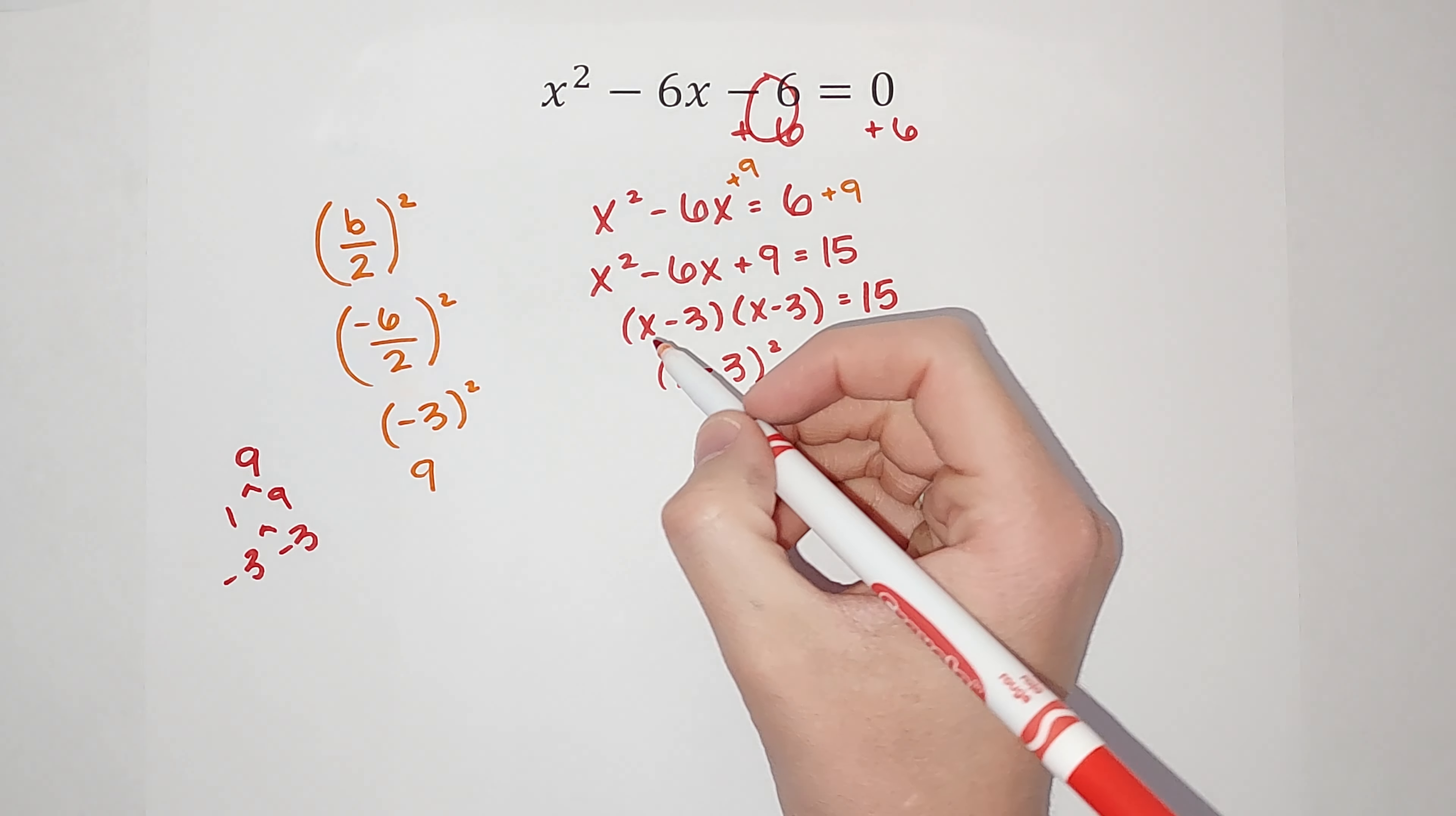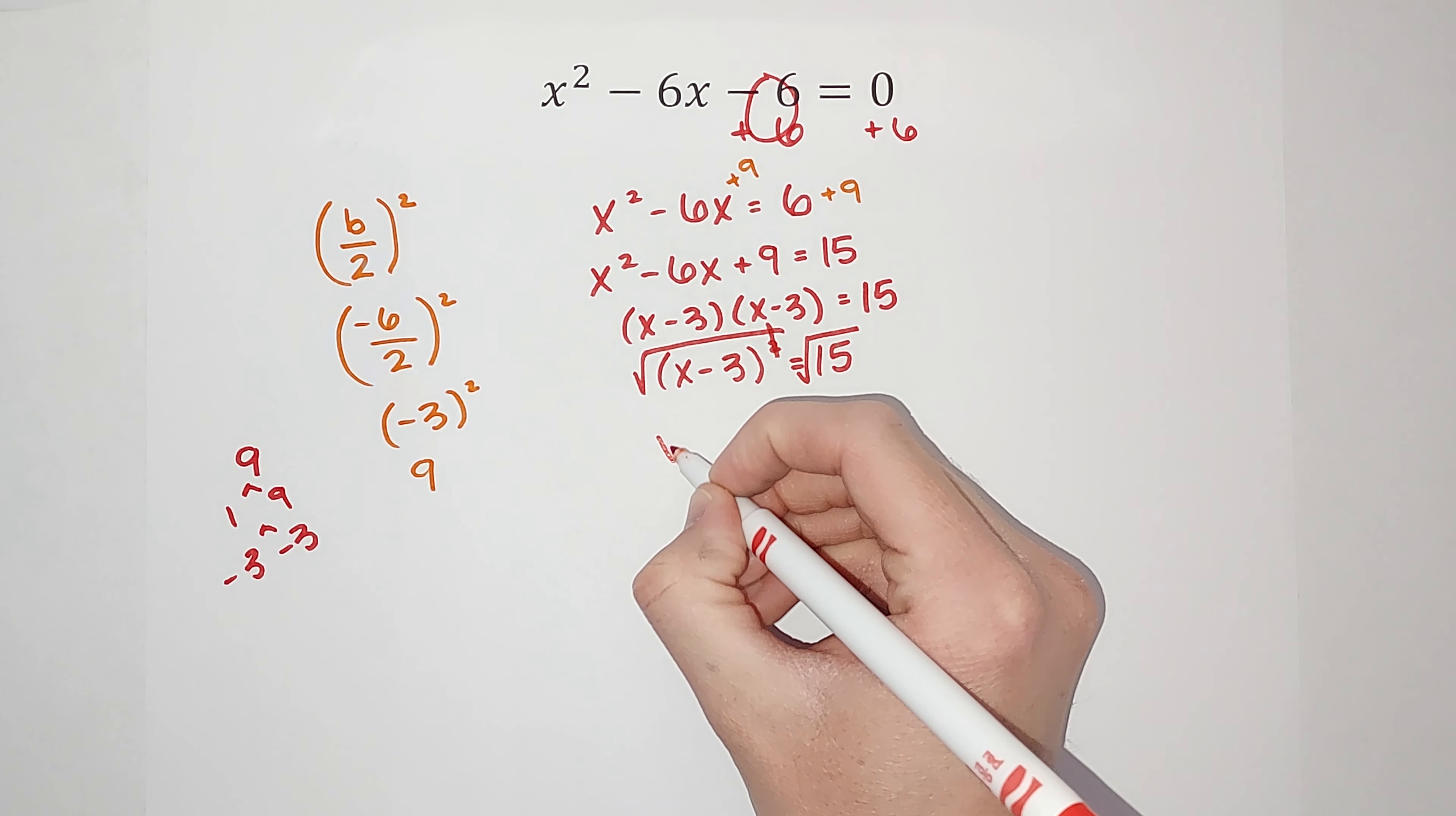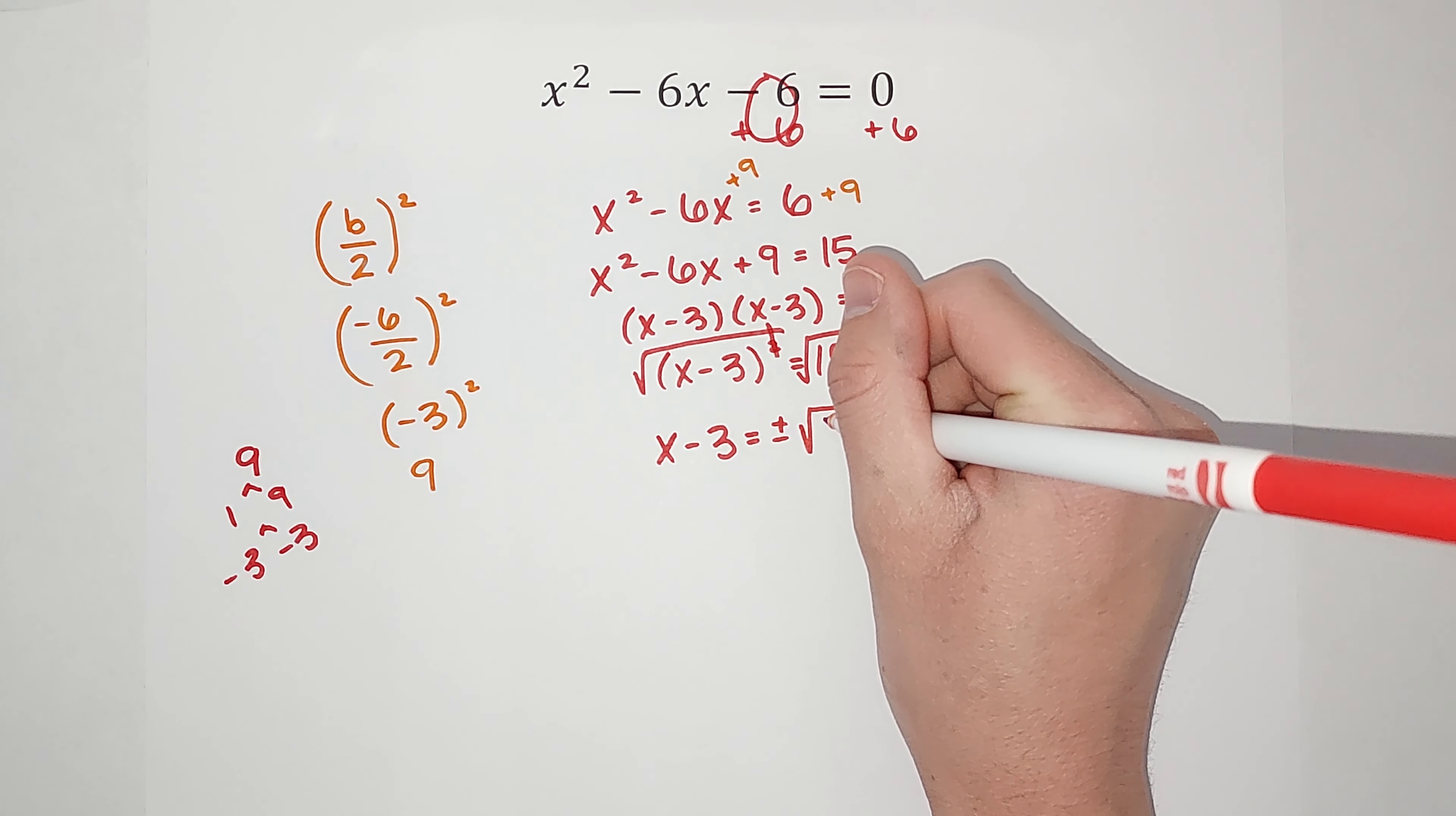Now I'm just going to keep solving for x, so I'm going to take the square root of both sides. When I do that, the squared and the square root cancel. So I end up with x minus 3 equals the square root of 15. The reason I'm not writing it quite yet is whenever we introduce a square root into an equation, we need to put plus or minus.